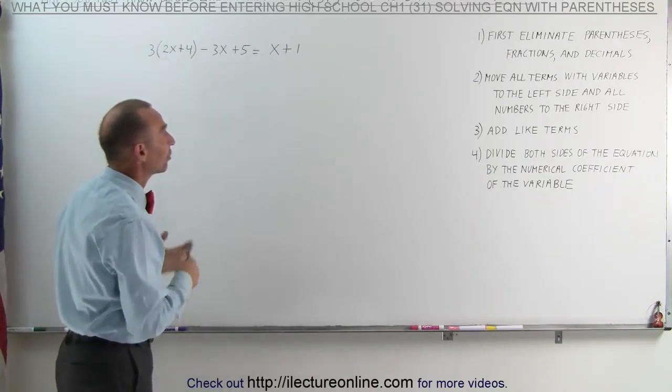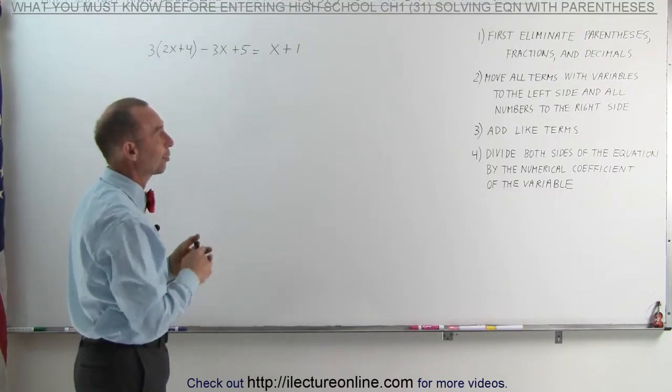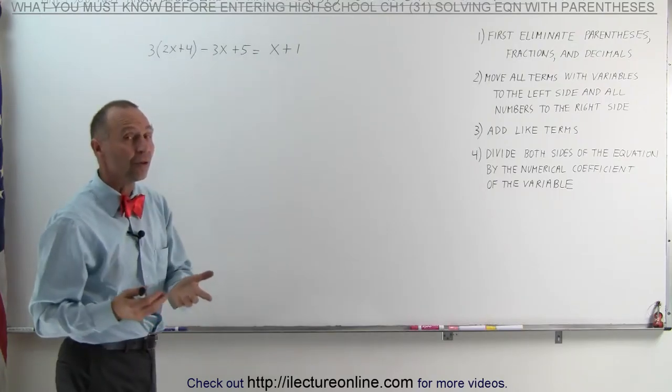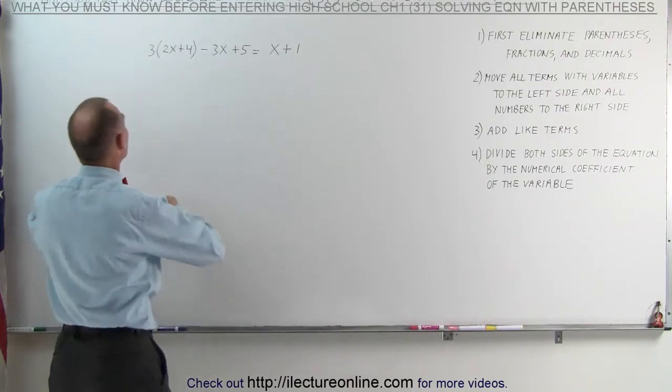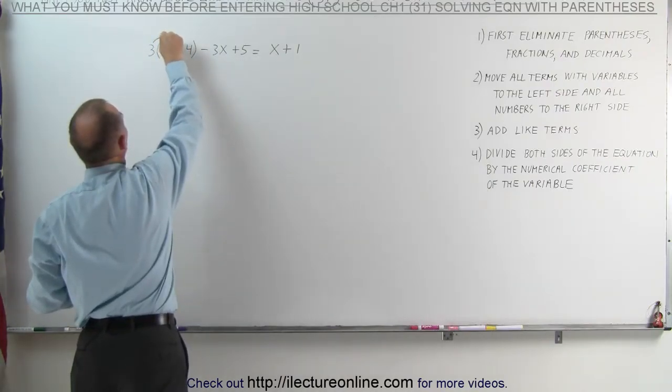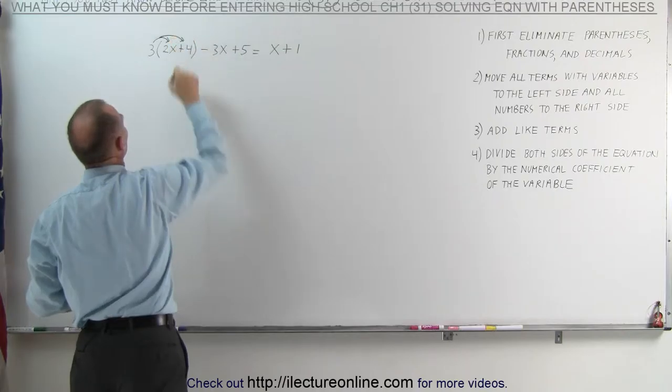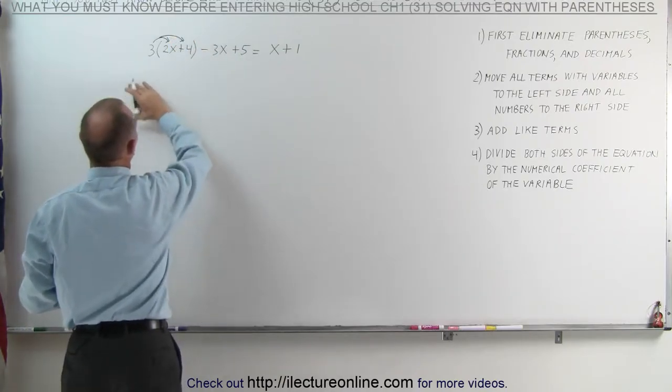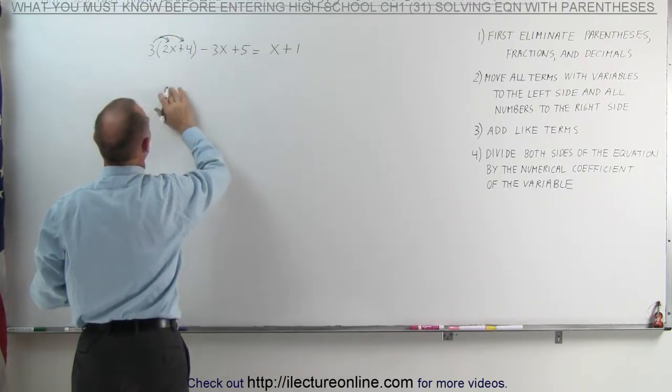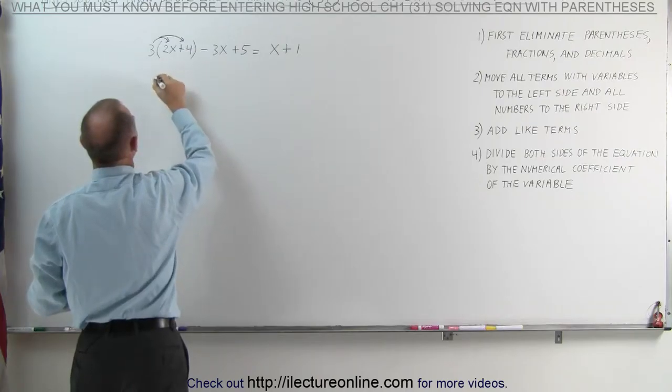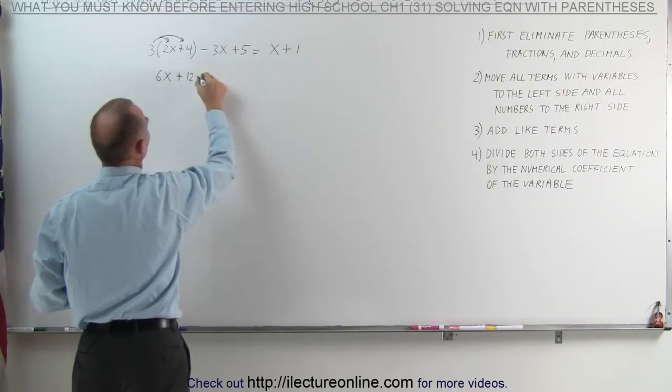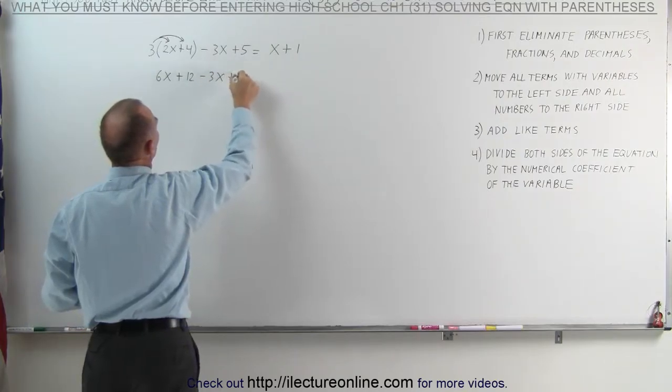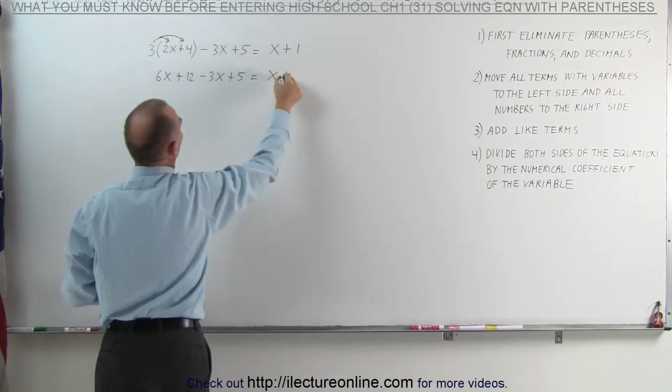Let's go ahead and solve this problem so you can see how we apply these four steps. First step, since there are fractions, we need to get rid of the fraction first. So we're going to multiply the 3 by the two terms inside the fraction. That's called distributing the 3 on the two terms. 3 times 2x is 6x. 3 times 4 is 12. We still have the minus 3x and the plus 5 equals x plus 1.